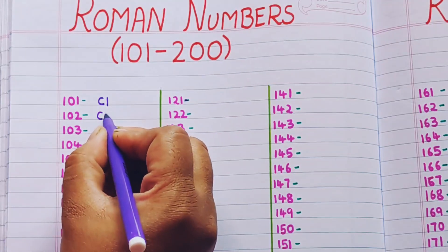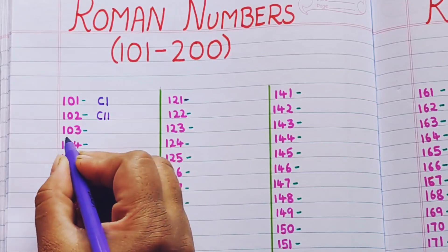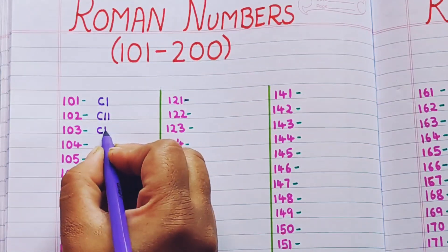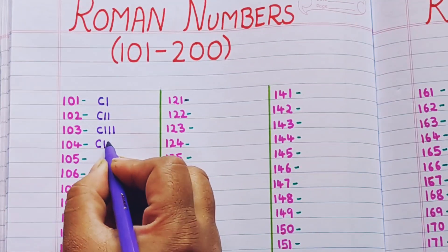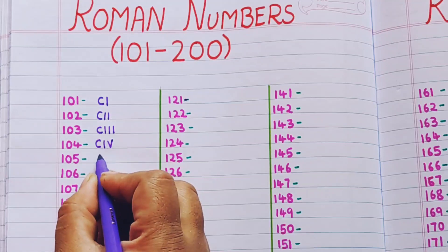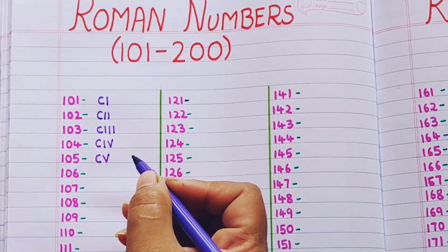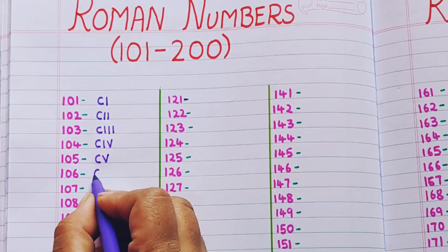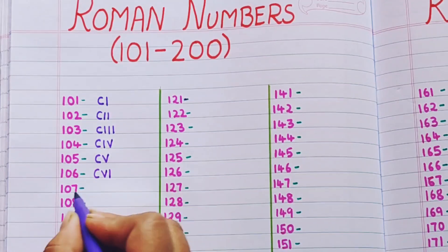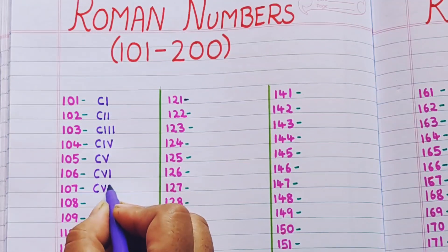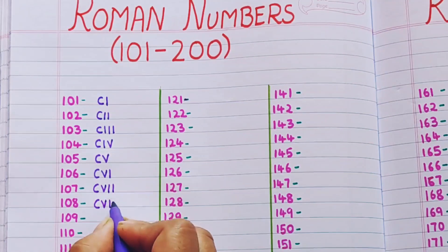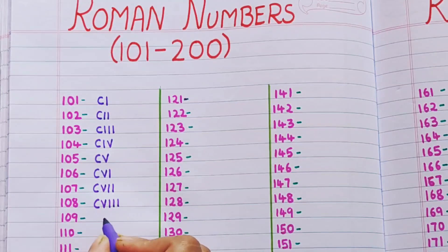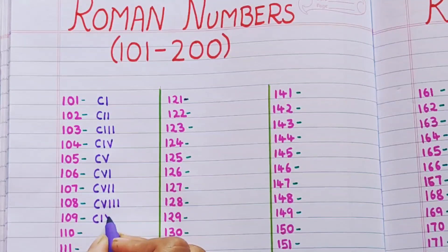102 is CII, 103 is CIII, 104 is CIV, 105 is CV, 106 is CVI, 107 is CVII, 108 is CVIII, 109 is CIX.